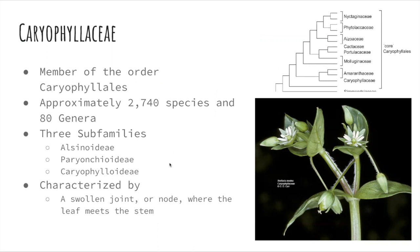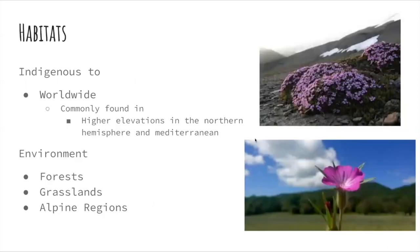This family is characterized by a swollen jointed node where the leaf meets the stem, as you can see in the picture to the right. Caryophyllaceae can be found worldwide, but is most commonly found in higher elevations in the northern hemisphere and Mediterranean. It can typically be found in forests, grasslands, and alpine regions.